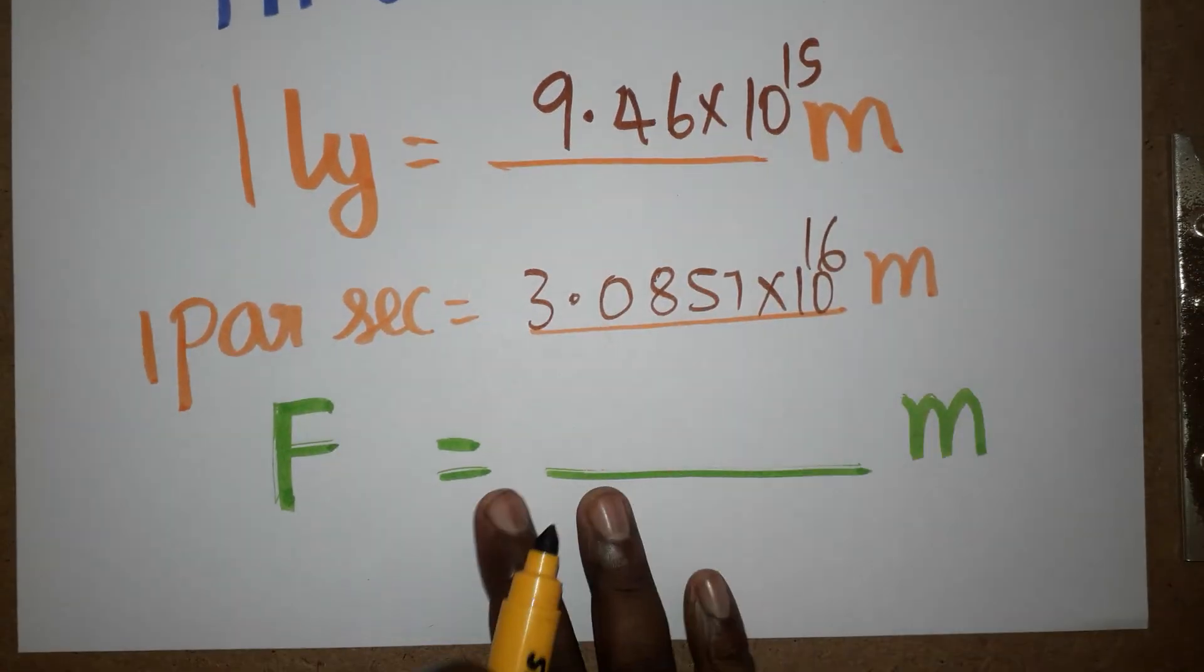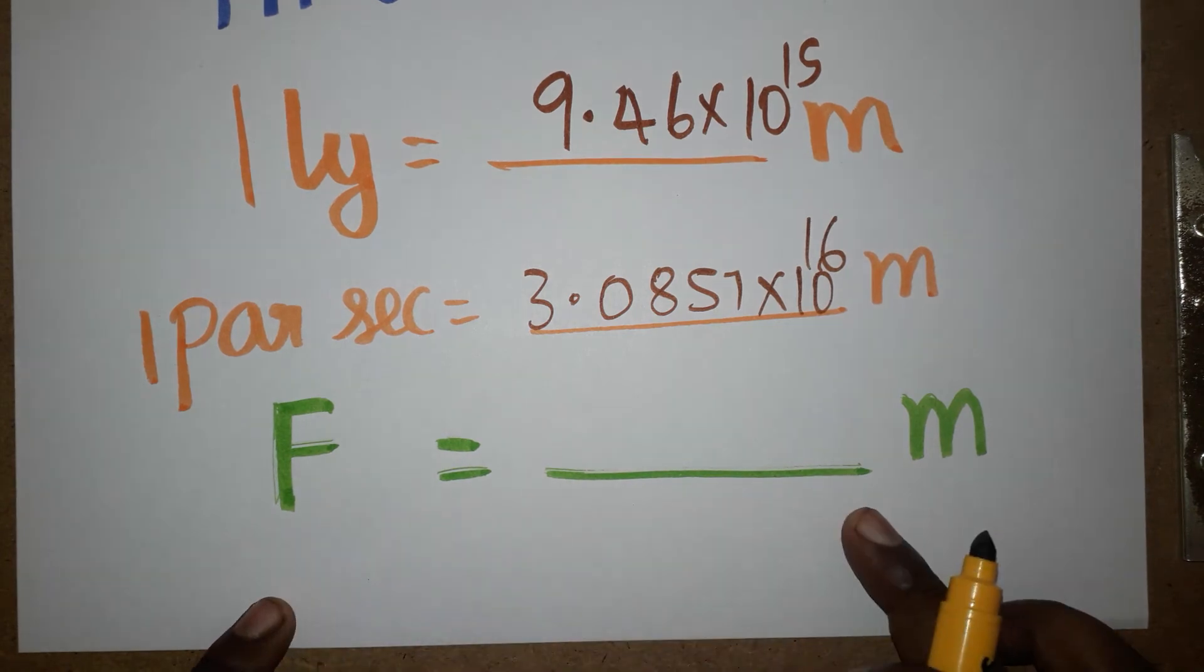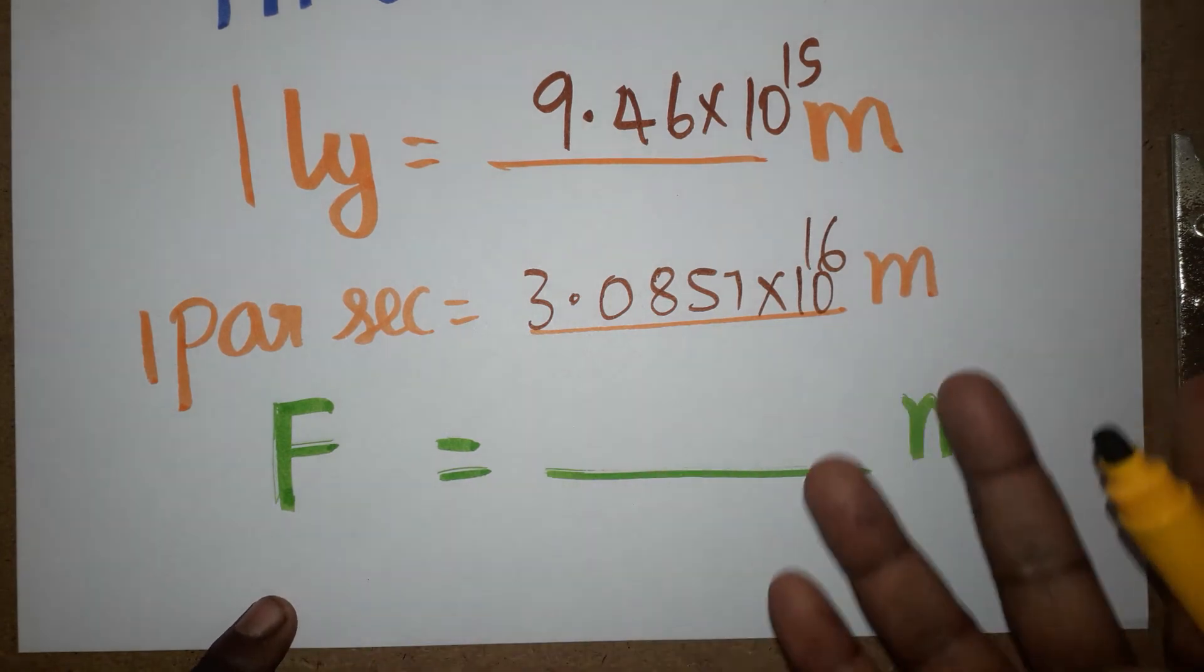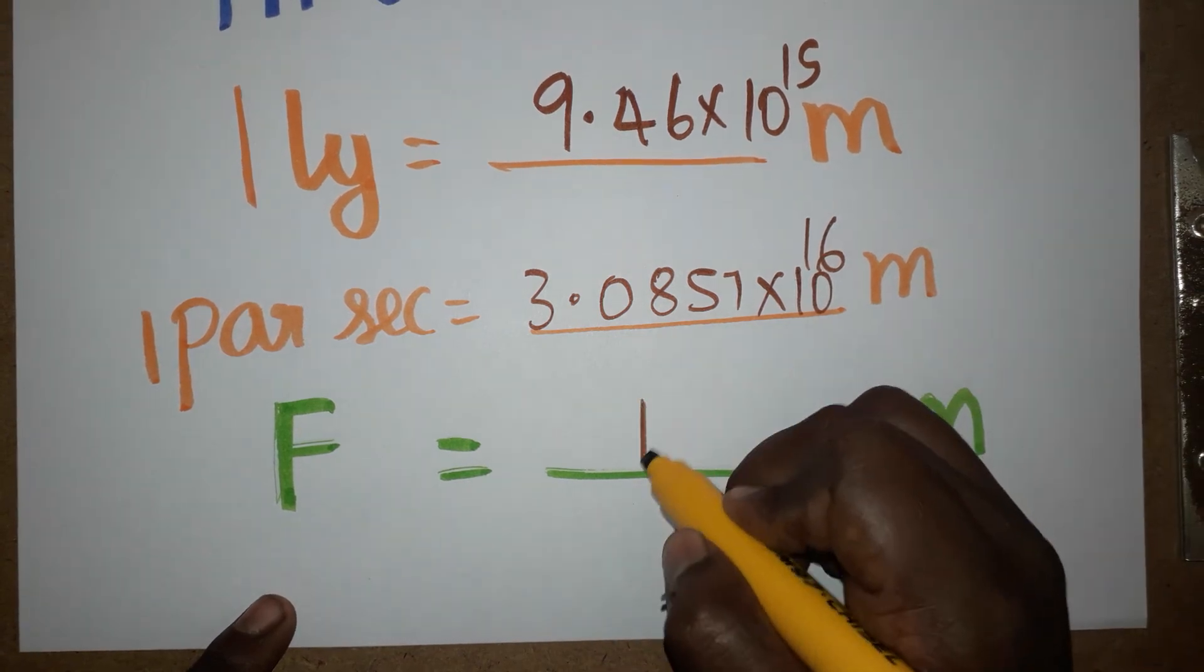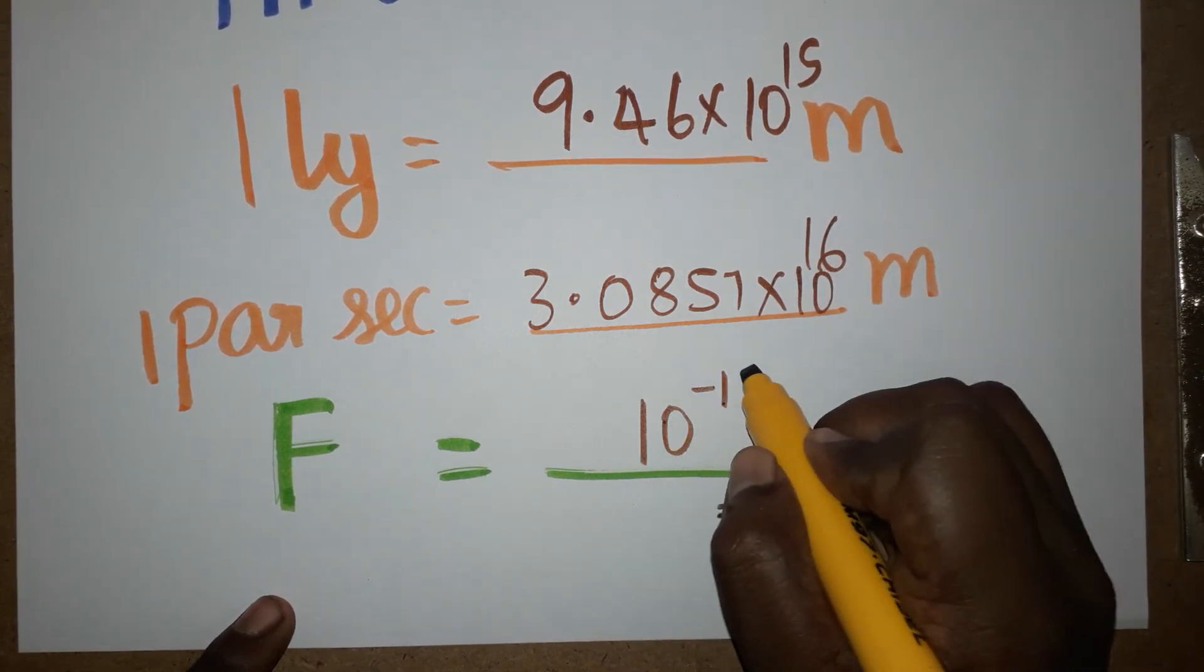Another one is nuclear size. The size of the nucleus approximately is equal to fermi or femto, which is going to be 10 power minus 15 meter.